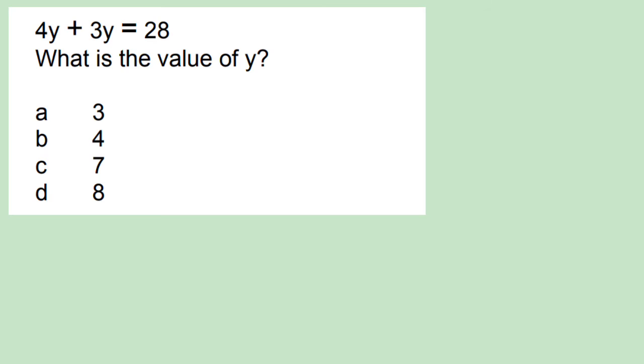All right, next question. Going into your exam guys, make sure you are aware of unlike and like terms in algebra. Here we have 4y plus 3y equals 28. 4y and 3y are like terms, which means you can add them together. So we get 7y equal to 28. How do we solve for y now? Divide both sides by 7. 7 into 7 will just give you 1 on the left hand side, so you have 1y, and then 7 into 28 gives you 4. So y is equal to 4.